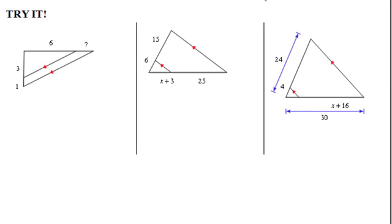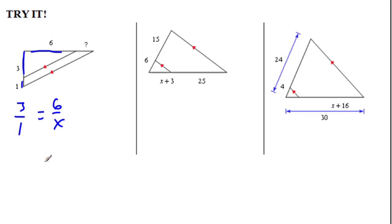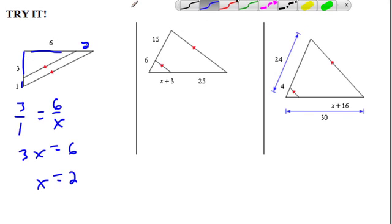Let's do some problems. How do we set this up? I'm going to say 3 is to 1 as 6 is to X. We've got a proportion — this chapter is all about proportions — so cross multiply and solve. 3 times X is 3X, 1 times 6 is 6, so X has got to be 2. Done and done. 6 is to 2 as 3 is to 1.